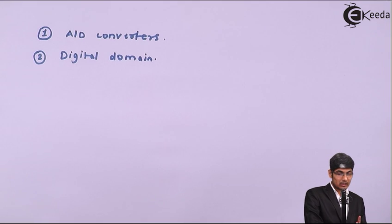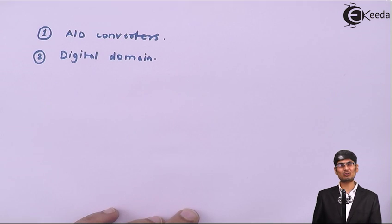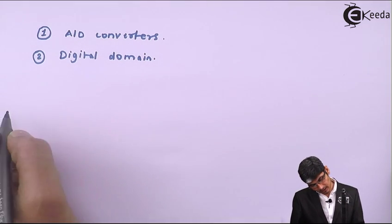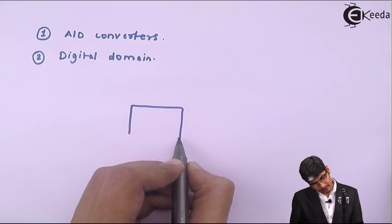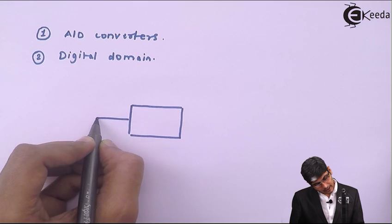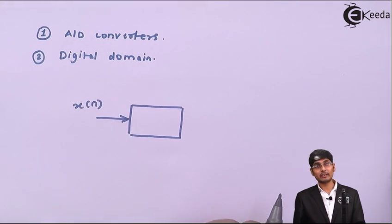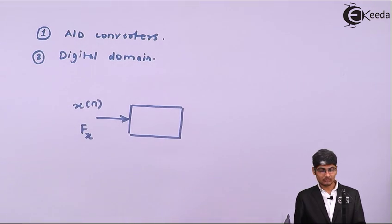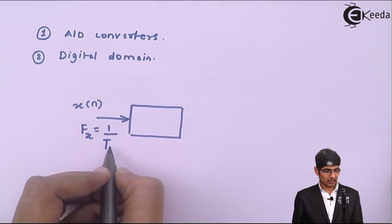We will be looking at an A-to-D domain and a digital domain approach. For the first mechanism, we take the input x(n), which is sampled at sampling frequency fx, where fx equals 1 divided by Tx.